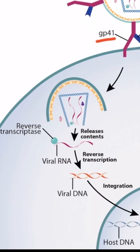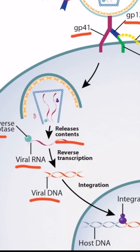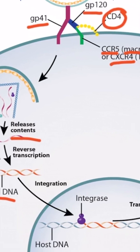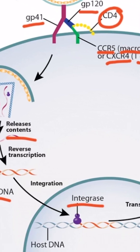The virus enters the cell via endocytosis. From here, the virus releases its contents and reverse transcriptase converts the viral RNA into double-stranded viral DNA. Next, the virus uses integrase to insert the viral DNA into the host DNA.